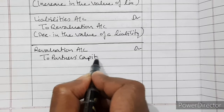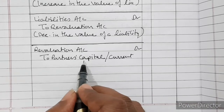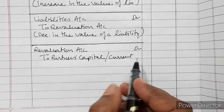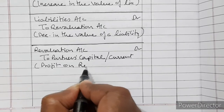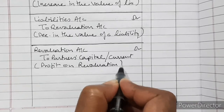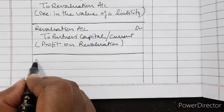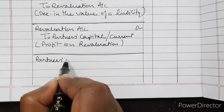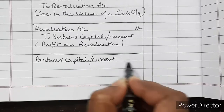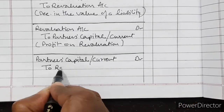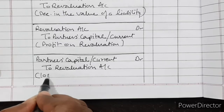If the partners' capital account is fluctuating then we use Capital Account; if it is fixed then we use Current Account, for profit on revaluation. If there is a loss, then Partners' Capital Account is debited to Revaluation Account for loss on revaluation.